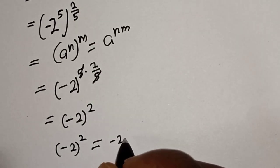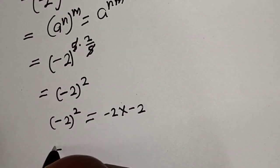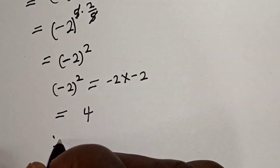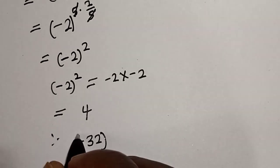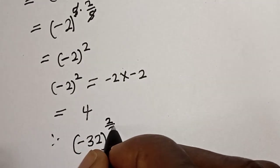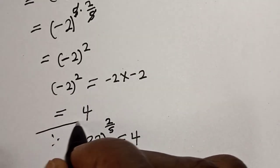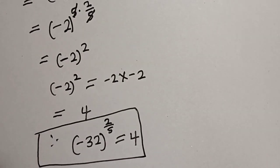Then this is equal to 4. Therefore, minus 32 to the power of 2 over 5 is equal to 4. That is our final answer.